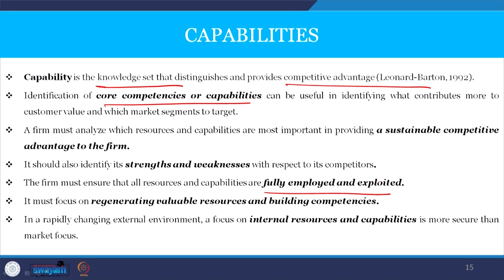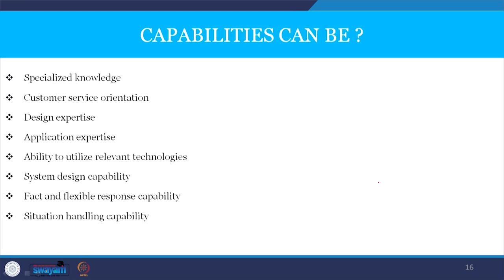The firm must focus on regenerating valuable resources and building competencies in a rapidly changing external environment. In a fast-changing environment, a focus on internal resources and capabilities is more secure than a market focus. Capabilities can include specialized knowledge, customer service orientation, design expertise, application expertise, ability to use relevant technologies, systems design capability, and flexible response and situation handling capability. For example, consultant firms like McKinsey have the capability to analyze and propose solutions for complex business problems — their competitive advantage comes through business analysts trained in data analysis.